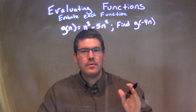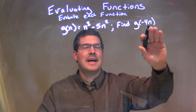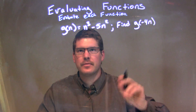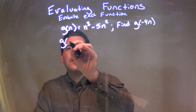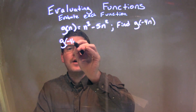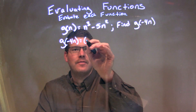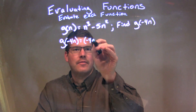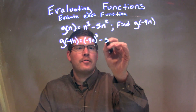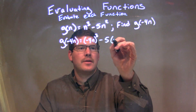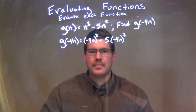Every single time we see an n, we need to plug in a negative 4n. So, g of negative 4n is equal to negative 4n to the third power, minus 5 times negative 4n to the second power.